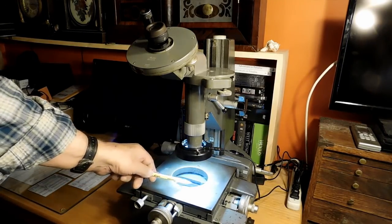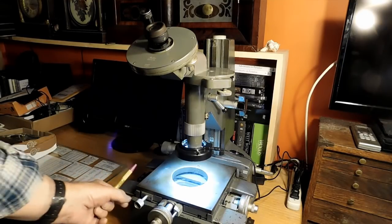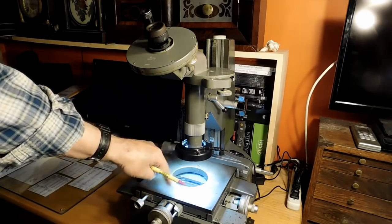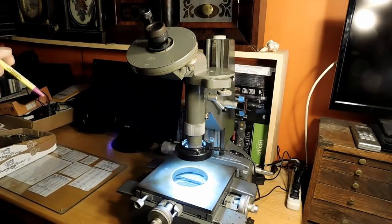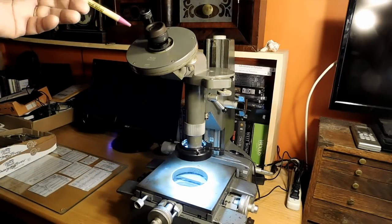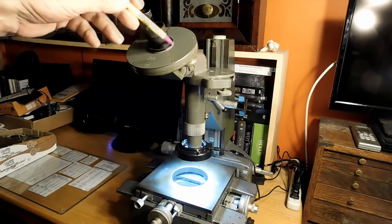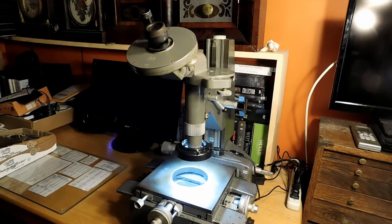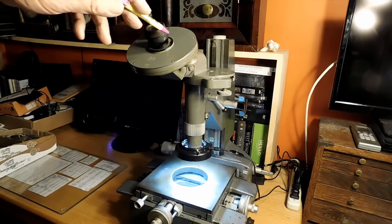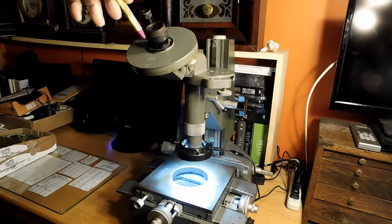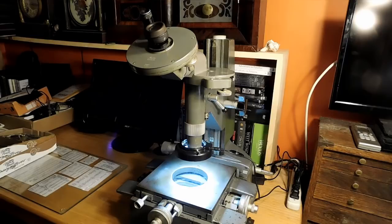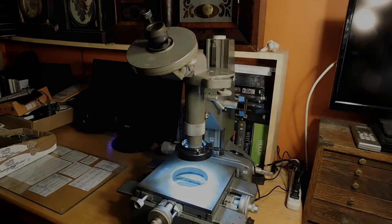This is the field down here where we'll do all our measuring from. This actually turns the field, but what we're going to be using first is we're going to count the number of teeth. There's a graticule in here, a piece of glass that's laser etched. I'll show you what it looks like in AutoCAD, but we'll use that to count the teeth, so that'll be the first thing that we'll do.